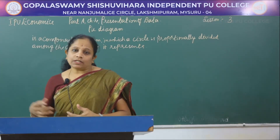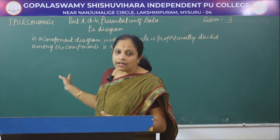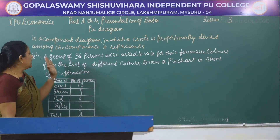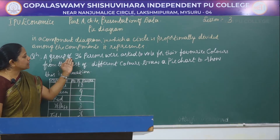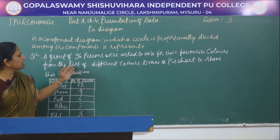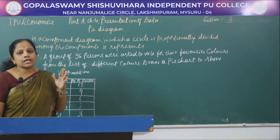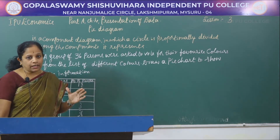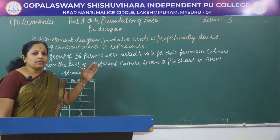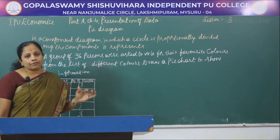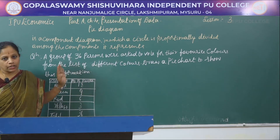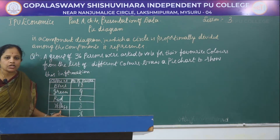Now let us see about the calculation of the components of the diagram with the help of an example. The question will be asked in the examination like this: In a group of 36 persons, they were asked to vote for their favorite colors from a list of different colors. We have to draw a pie chart to show this information, and the information is given here.